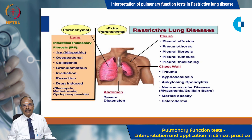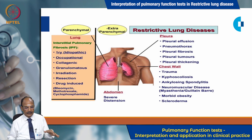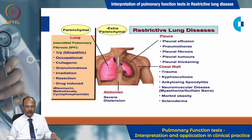This diagram depicts the differences between intrinsic and extrinsic pathology. Parenchymal causes, which are intrinsic, include interstitial pulmonary fibrosis, occupational lung diseases, collagen vascular diseases, granulomatous diseases, post-radiation fibrosis, post-pneumonectomy or resection, and drug-induced pulmonary fibrosis, etc.